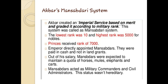Akbar maintained palace guards, royal bodyguards, and troops of trusted men, and directly recruited armed soldiers. He also adopted the custom of taking rolls of soldiers and branding the horses, known as Daag and Chehra. Mansabdar positions were not hereditary; if a Mansabdar died, the post was filled by someone suitable appointed by the emperor. Jahangir followed the system laid down by his father with minor changes. Shah Jahan reduced the number of Savars under a noble, and Aurangzeb drastically increased the number of Mansabdars, creating a shortage of jagirs. This covers Akbar's political history and administration as per the syllabus.